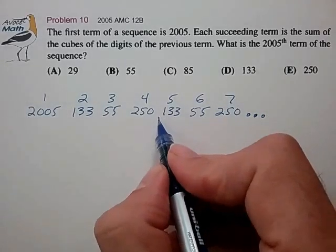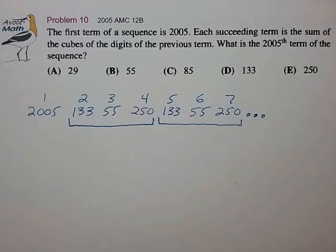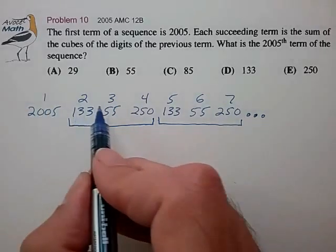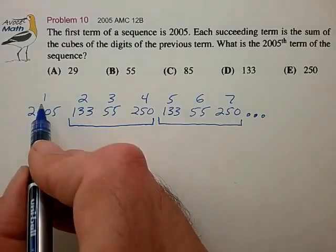And so with every grouping of 3, this pattern repeats. And what that means is that the remainder upon division by 3 of the term number will be helpful in predicting the higher terms. So let's look at the remainder upon division by 3 of the term number.